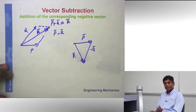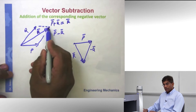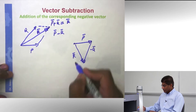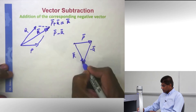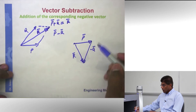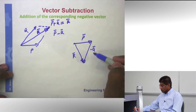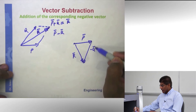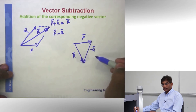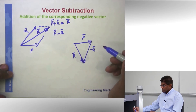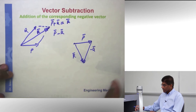You see that? This is the result of adding, and this is the result of subtracting. What we have done is added the corresponding negative vector — instead of adding Q, we are subtracting Q. So subtraction is pretty straightforward and easy.